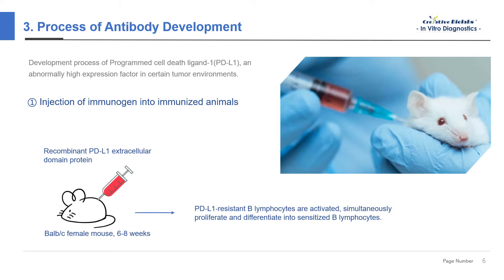We use mice at 6 to 8 weeks and inject recombinant PD-L1 extracellular domain protein by abdominal subcutaneous multiple immunization. Antigen enters the peripheral immune organs through the blood circulation or lymph circulation, stimulates the corresponding B lymphocyte clones, activates, proliferates, and differentiates into sensitized B lymphocytes.